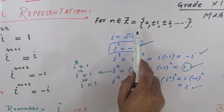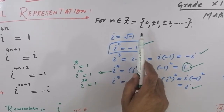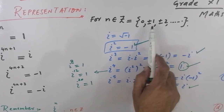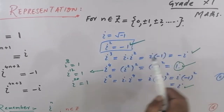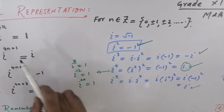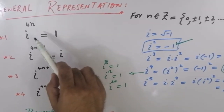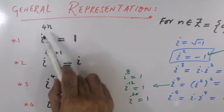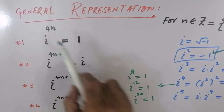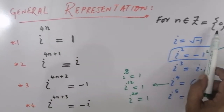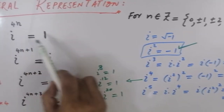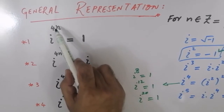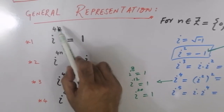We know that in the set of integers, numbers are 0, plus one, minus one, plus two, minus two, and so on. We have both general and interesting results. IOTA raised to power 4n, where n belongs to the set of integers, always equals 1. This is an interesting result.